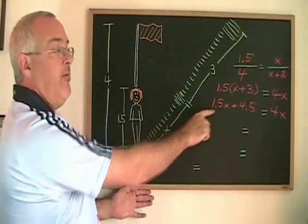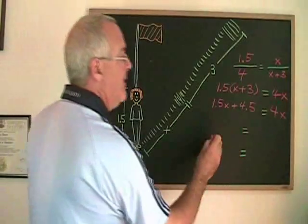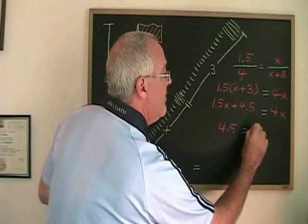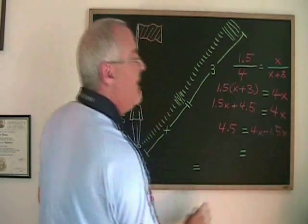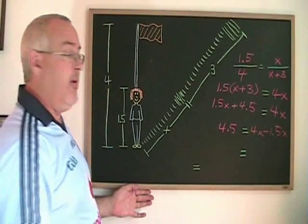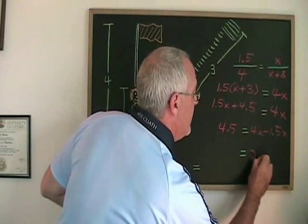If I move the 1.5x to the other side of the equals, I get 4.5 equals 4x minus 1.5x. Of course, 4x minus 1.5x is 2.5x.